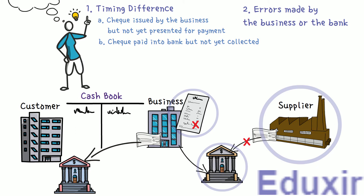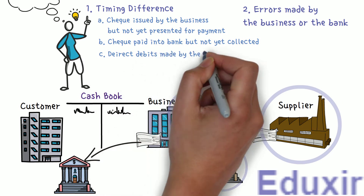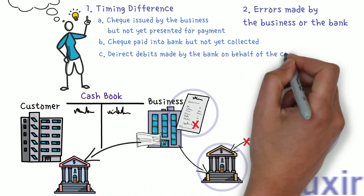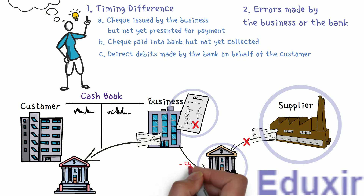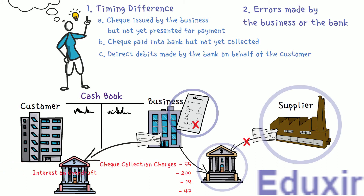The next reason is direct debits made by the bank on behalf of the customer. Sometimes the bank deducts amounts for various services from the business bank account. The business will not be aware of these deductions until the bank statement is received. Examples of such deductions are check collection charges, interest on overdraft, etc. As the business does not know about these direct debits, they will not be recorded in the business cashbook, causing a difference between the cashbook balance and the bank passbook balance.